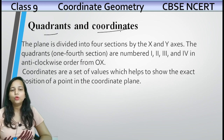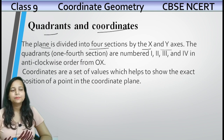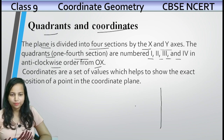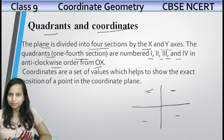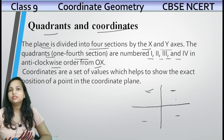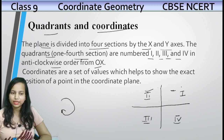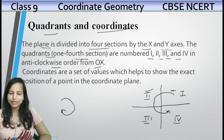Quadrants kya hote hain? A plane is divided into four sections by the x and y axis. The four sections are numbered one, two, three and four in anticlockwise order from OX. Yeh ek plane hai, plane ko divide kiya jaata hai 4 sections mein — yeh one-fourth sections hain, inko quadrants bolte hain. Yeh first quadrant hai, yeh second quadrant hai, this is third one and this is the fourth quadrant. Clock humara is tarah se chalta hai — humne anticlockwise direction mein banaya hai. Toh quadrants anticlockwise direction mein hote hain.